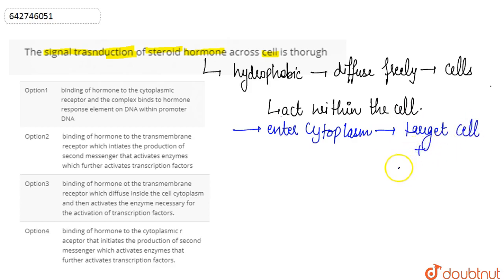They bind with the specific receptor proteins, and these hormone-receptor complexes then diffuse into the nucleus.